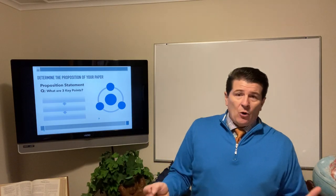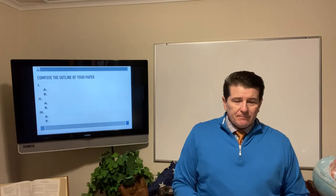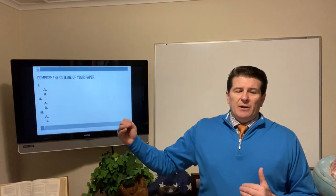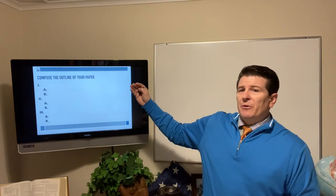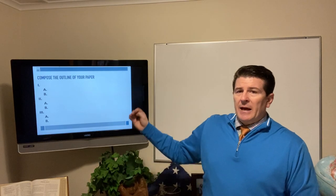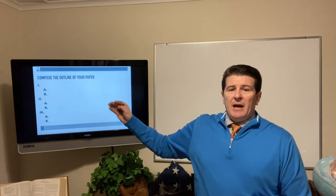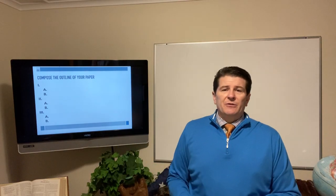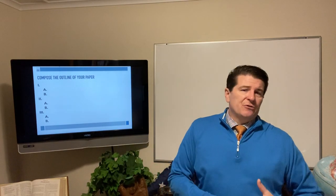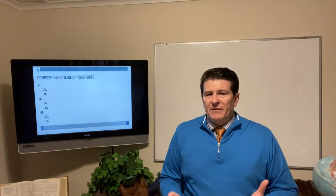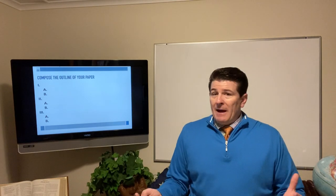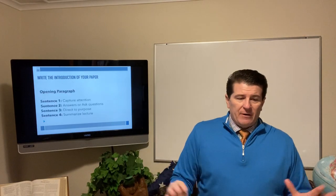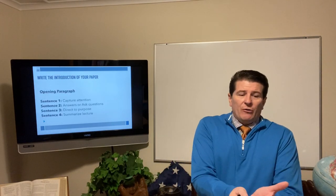Take those three points from your brainstorming page and start outlining what your proposition is going to be. Using a two-step outline, compose your three head topics — the key headers — and then your A and B sub-points. These are the supporting evidence, facts, reasons, definitions, quotes — whatever supports each header. Every paper follows this structure.